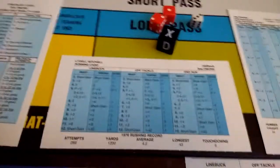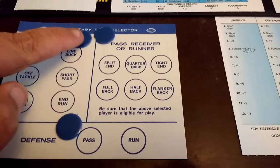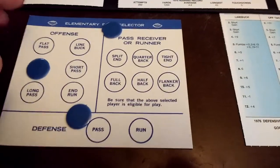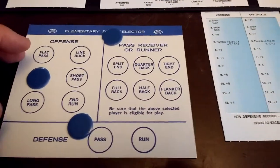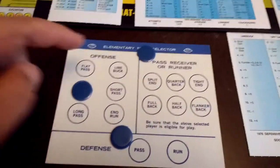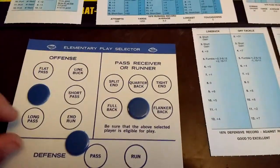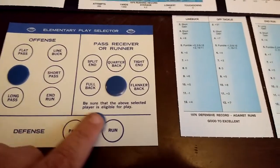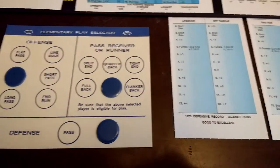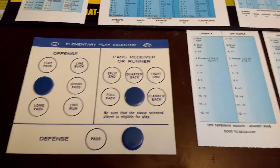That being said, it's a first and ten. So if you're selecting your play, cover it up so your opponent can't see what you're doing. Colts are going to select off-tackle with the halfback because I just happen to have Lydell Mitchell's card out. The defense, first and ten, they're going to go into a run alignment. That's pretty safe — in all likelihood in '76, first down, you're running the ball.